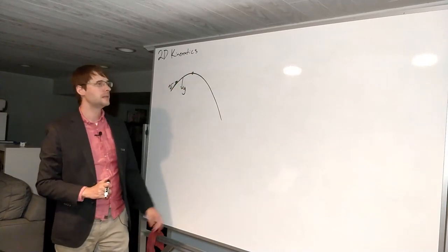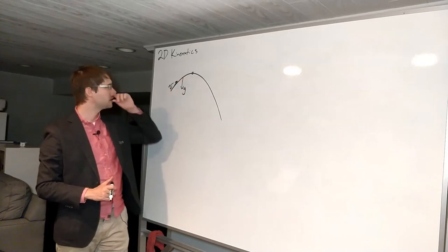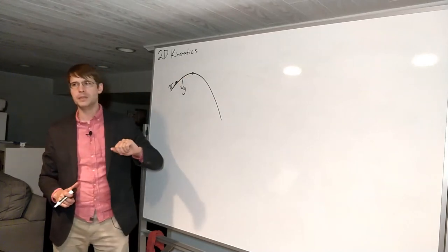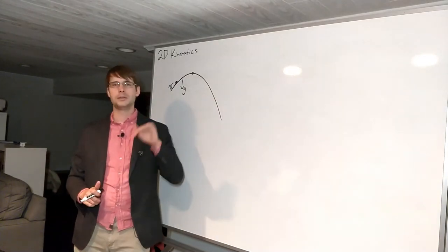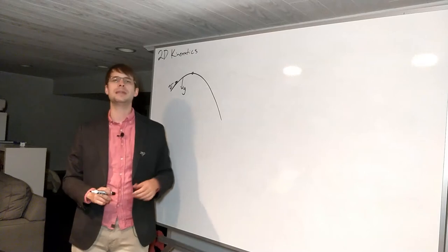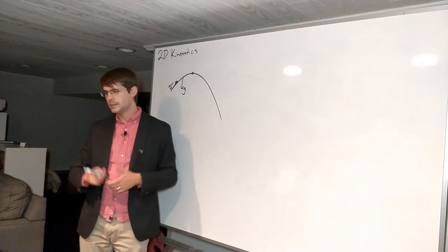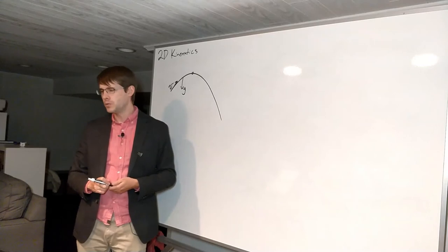And then the big thing to note about this here especially is that at the very top, the velocity is not zero, but the vertical velocity is zero. The horizontal velocity is the same as what the initial horizontal velocity was. These are the things you need to remember about projectiles in motion.